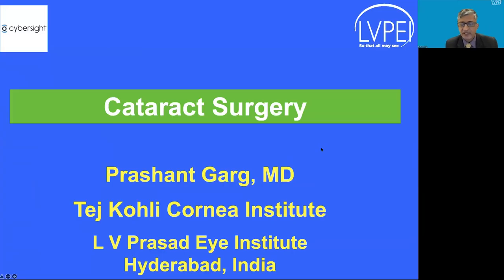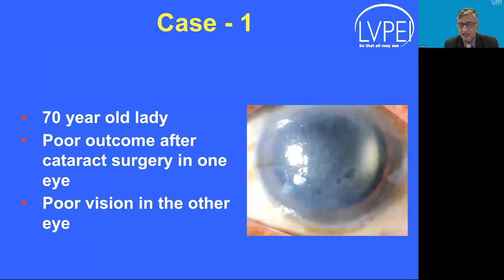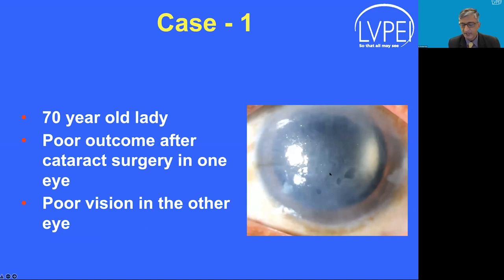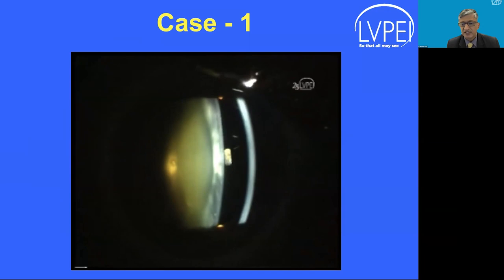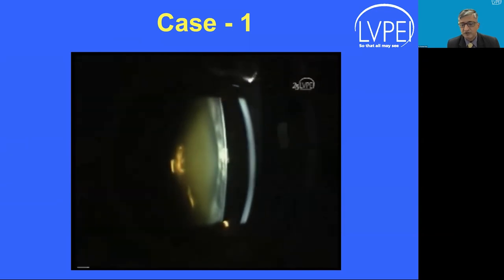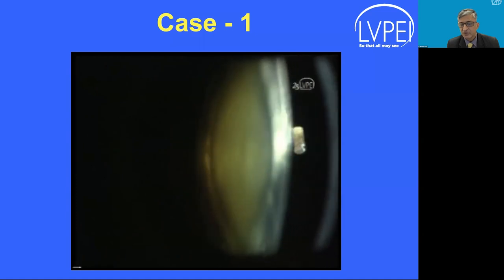Greetings from Hyderabad. Thank you to Cybersight for including me in this wonderful program. Let me begin with a case of a 70-year-old lady who had a poor outcome after cataract surgery in one eye, and has now developed poor vision in the other eye. The corneal picture of the operated eye shows the status, while the other eye cornea looks compact with nuclear sclerosis in the lens.